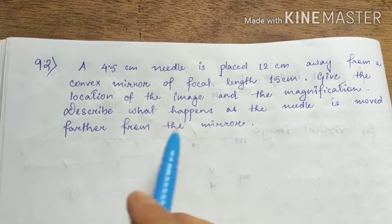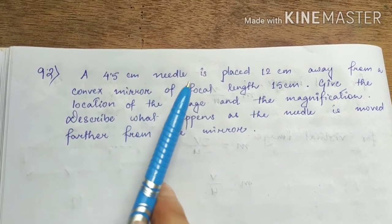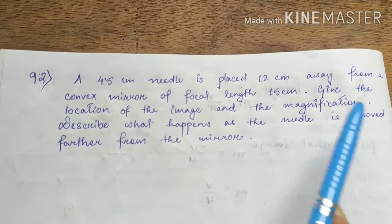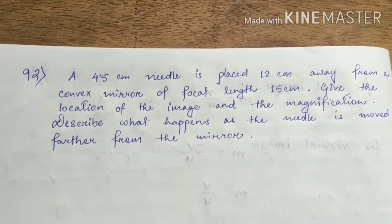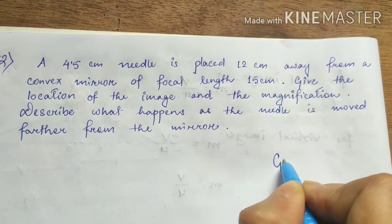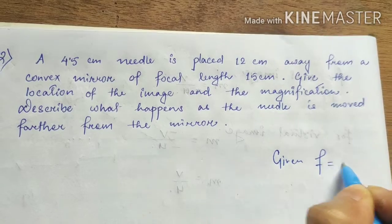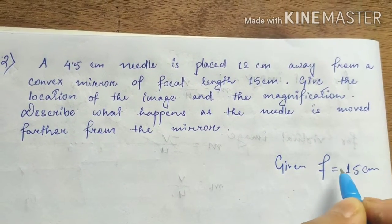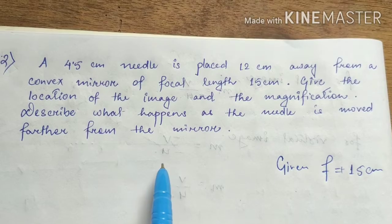Question number 2: A needle is placed 12 cm away from a convex mirror. The focal length of the convex mirror is 15 cm.